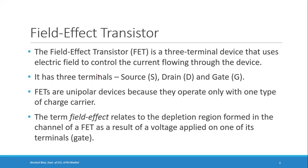BJT also has three terminals, but they were base, emitter, and collector. So in FET, in place of the base we have the gate, in place of the collector we have the drain, and in place of the emitter we have the source. These FETs are unipolar devices.